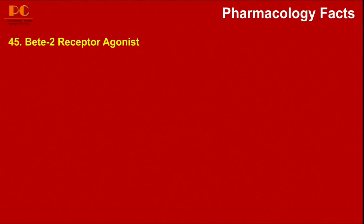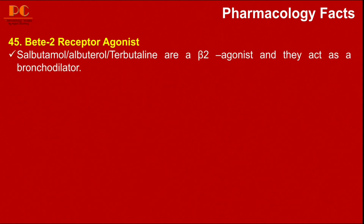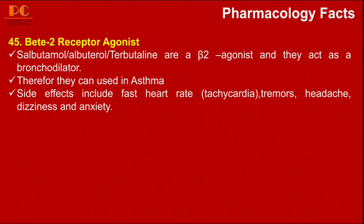The next fact is about beta-2 receptor agonists. Salbutamol, terbutaline, and albuterol are beta-2 receptor agonists that act as bronchodilators and are therefore used in asthmatic patients. The basic side effects of these drugs include fast heart rate (tachycardia), tremor, headache, dizziness, and anxiety.